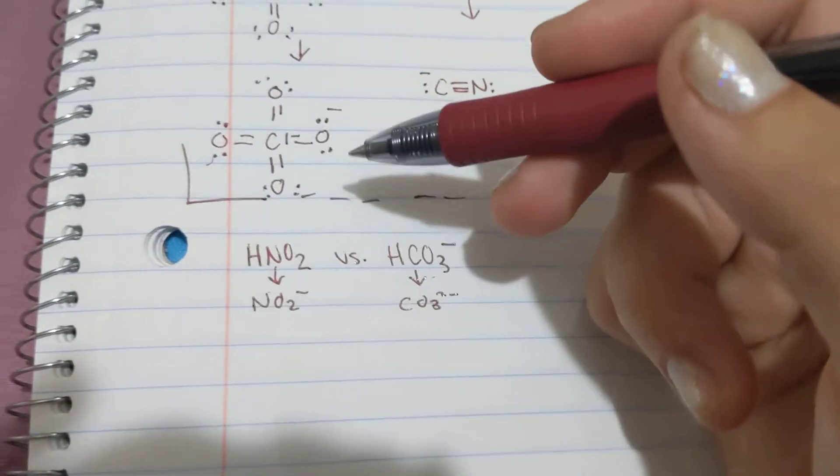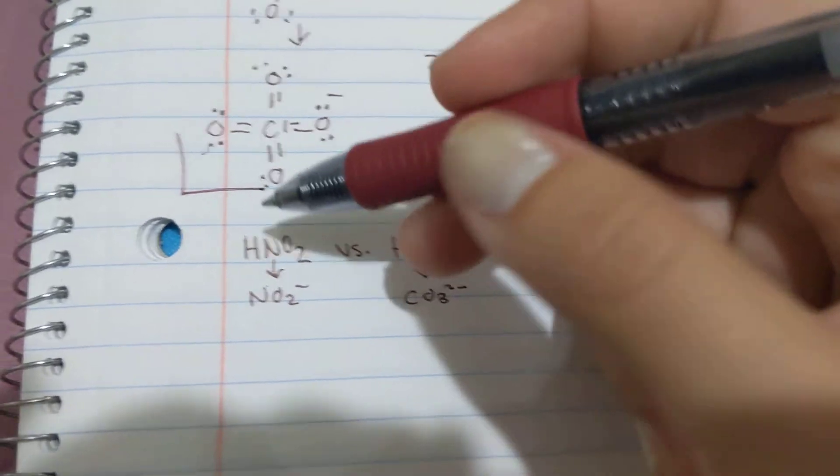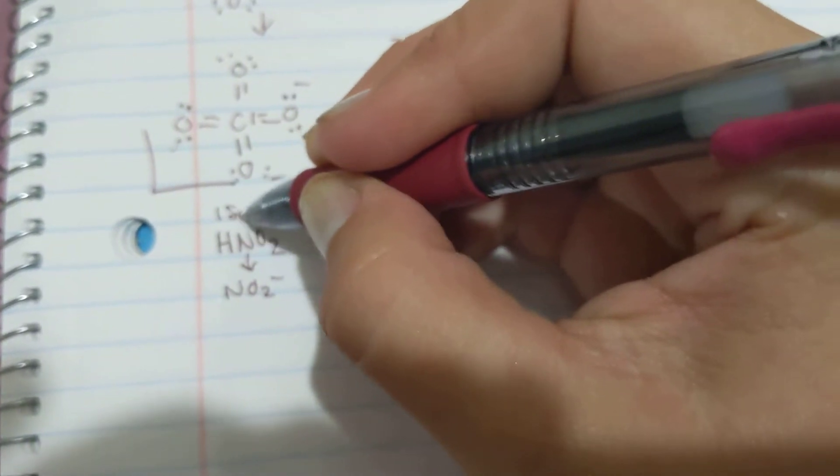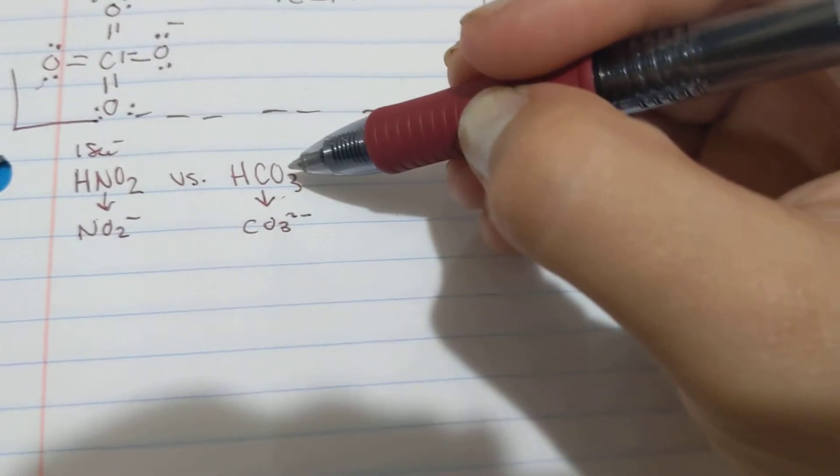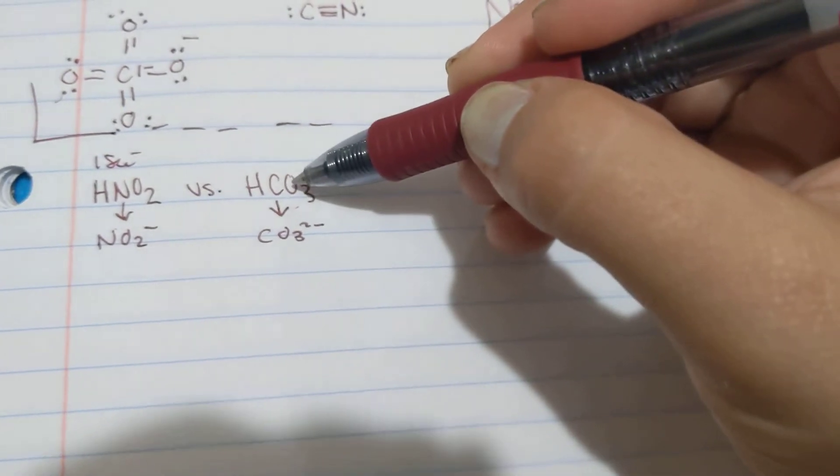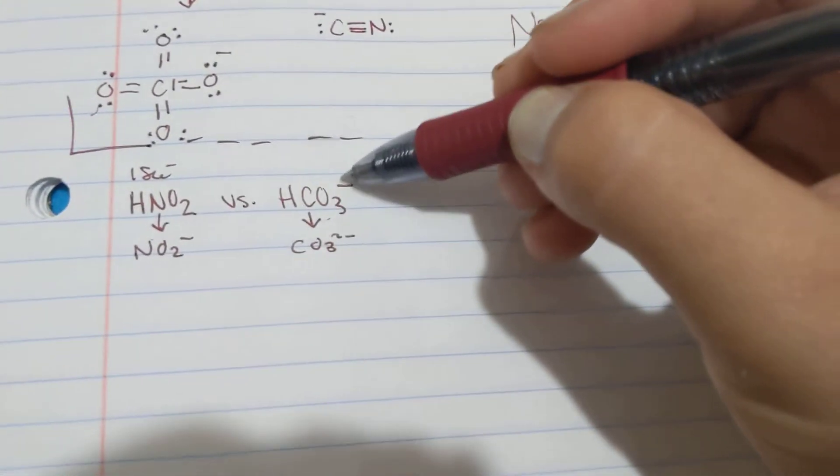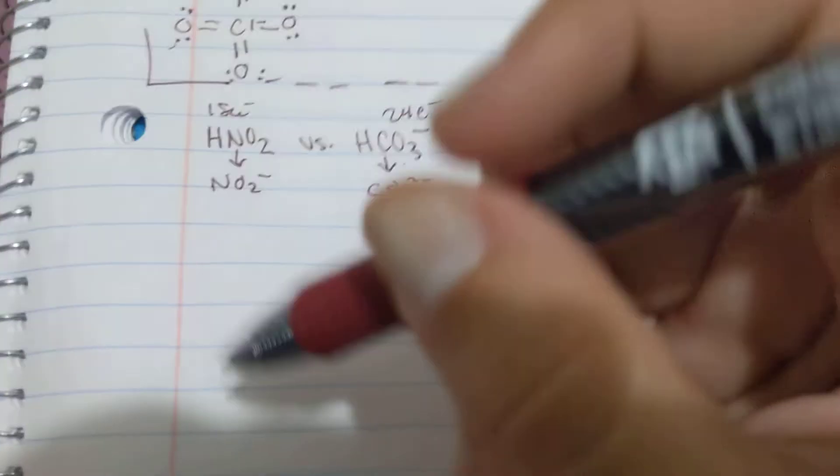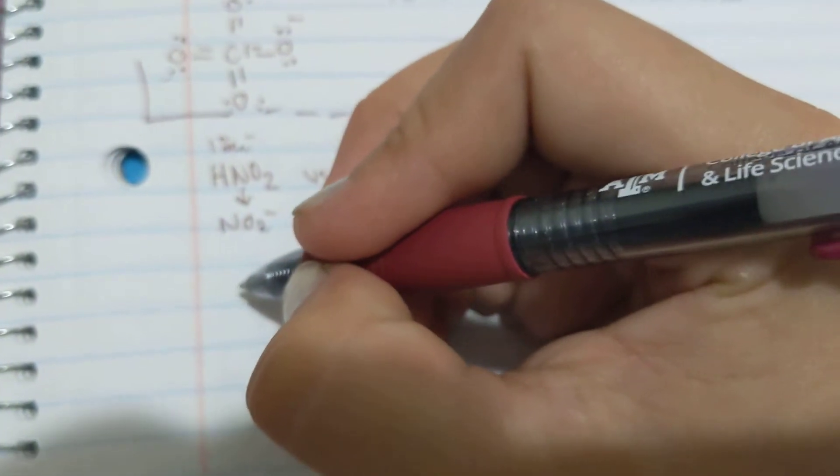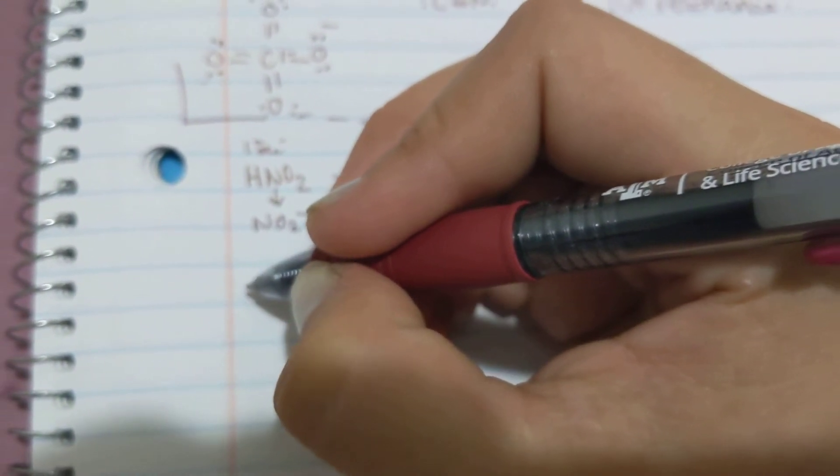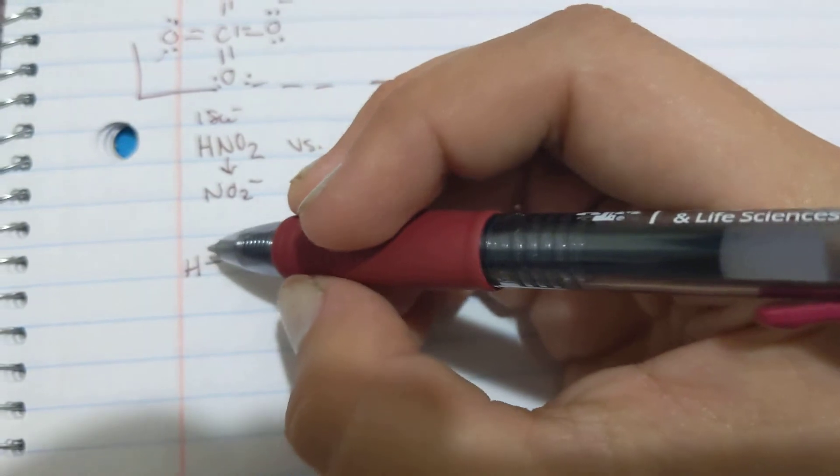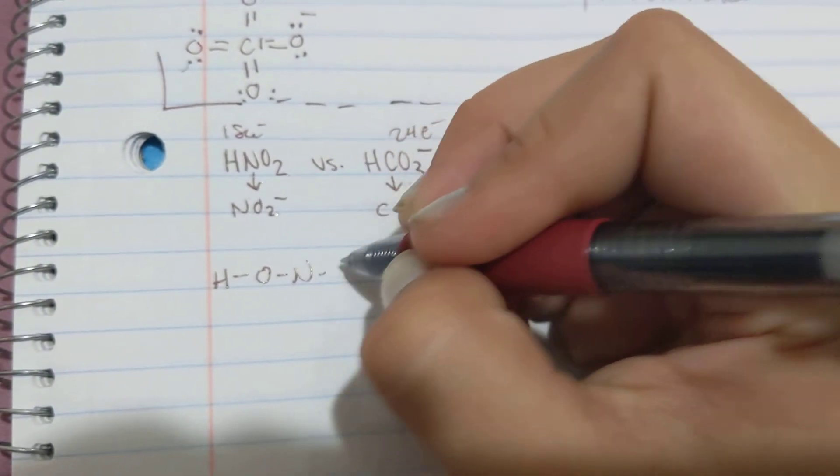And now we decide here what the total electron count is. And that's 1 plus 5 plus 6 times 2, which is 18 total. And this one is 1 plus 4 plus 6 times 3, plus 1 here, which is 24 E minus. And now we can draw our Lewis structures. So HNO is H on this end here, O, N, O.